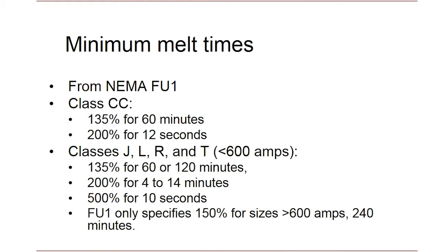For very large fuses — larger than 600 amps — the standard doesn't even define the 135% and 200% thresholds. Rather, it has a unique threshold of 150% defined for those size fuses.